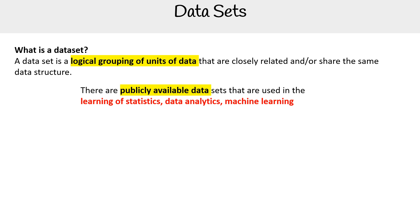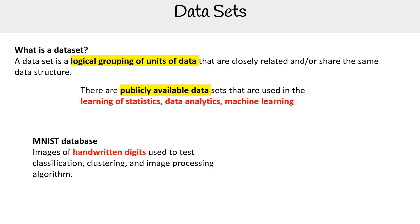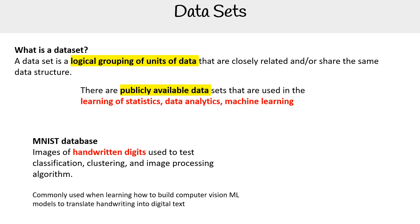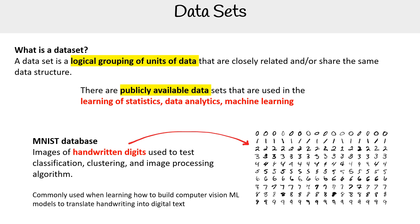The first is the MNIST database — images of handwritten digits used to test, classify, and cluster image processing algorithms. It's commonly used when learning how to build computer vision ML models to translate handwriting into digital text. Essentially, it's a collection of handwritten numbers and letters.